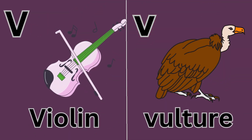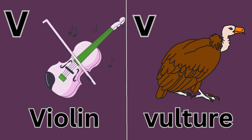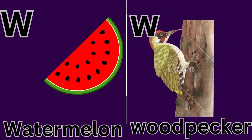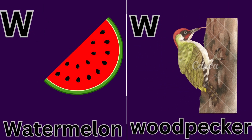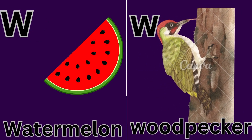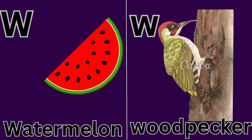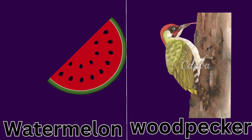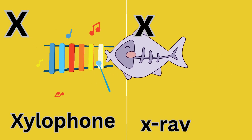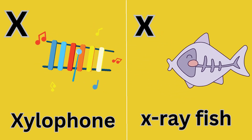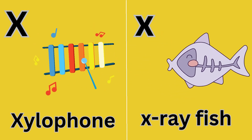V for Violin. V for Vulture. W for Watermelon. W for Woodpecker. X for Xylophone. X for X-Ray Fish.